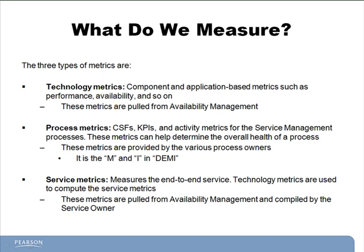Who creates these process metrics, and then whose job is it to pull these metrics? That would be the process owner. Every process that we've talked about so far has a process owner assigned, and every process owner has four main duties, abbreviated as DEMI — D-E-M-I. Here in CSI is where the process owner is going to measure the process against the metrics they've set, and then use that information to improve the process.